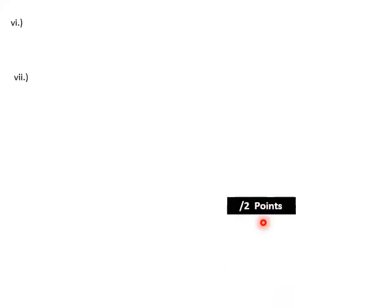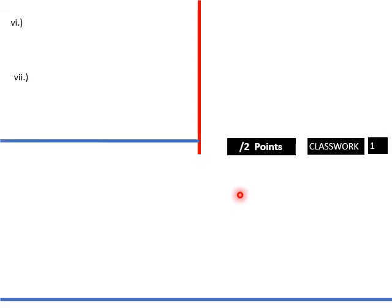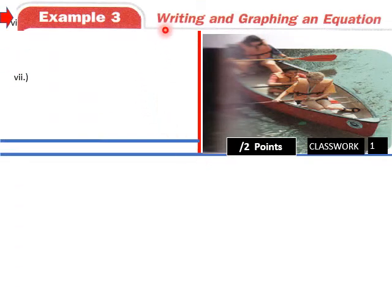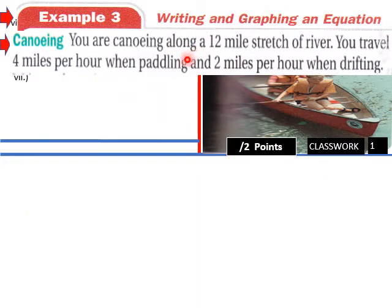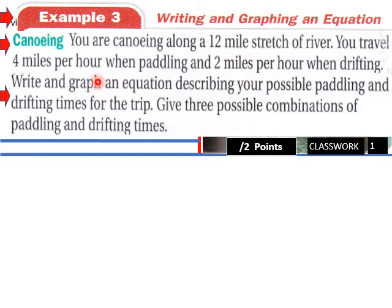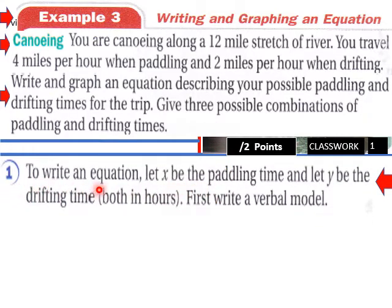So right into 8.3 part two. We'll go into example three: writing and graphing an equation. This is about canoeing along a 12-mile stretch of river. You travel four miles per hour when paddling and two miles per hour when drifting. Write and graph an equation describing your possible paddling and drifting times for the trip. Give three possible combinations of paddling and drifting times. So what do we need to do? We need to write an equation.